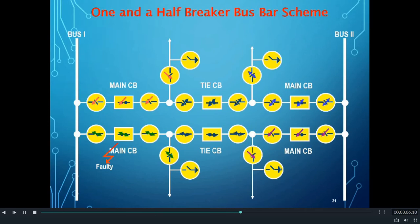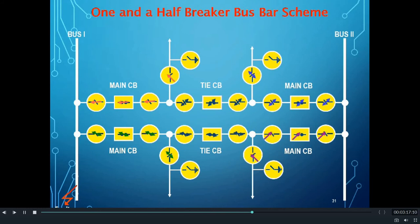Now let us see what happens in case of a bus fault. There is a fault in bus one, so the circuit breakers connected to bus one — the main CBs of two of the feeders — will trip. Because of the opening of these two main CBs, the faulty bus one gets disconnected from the system.